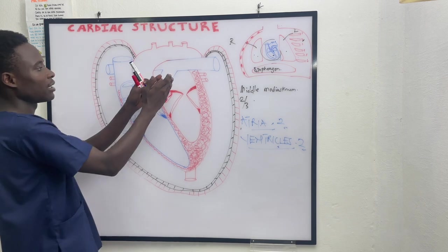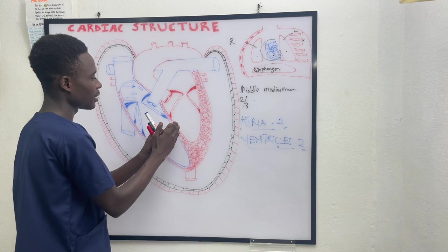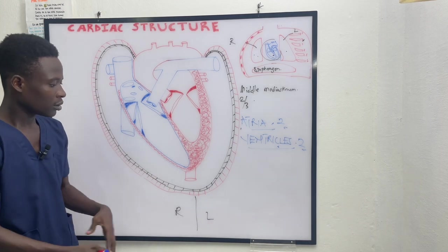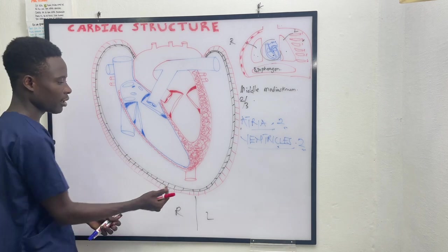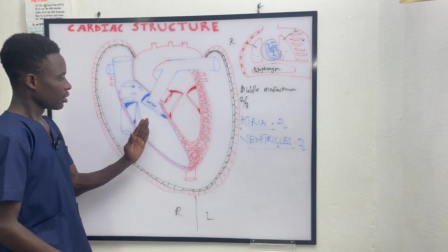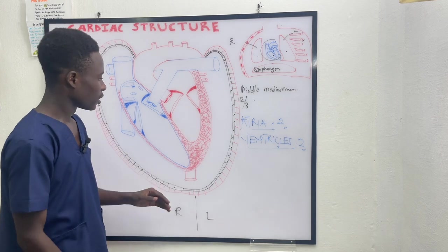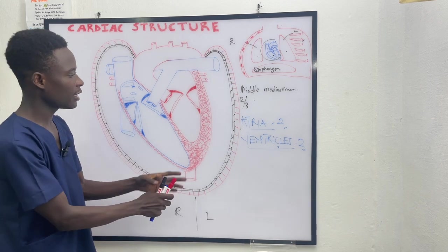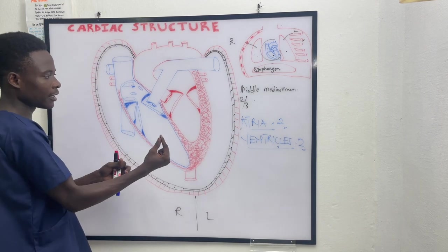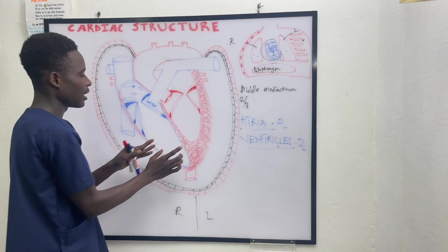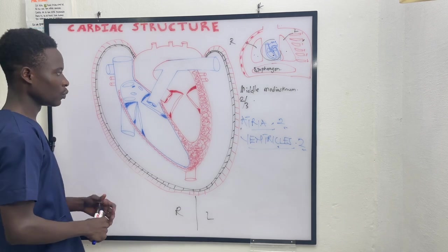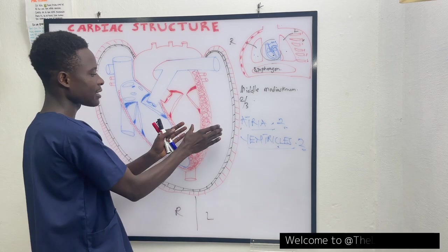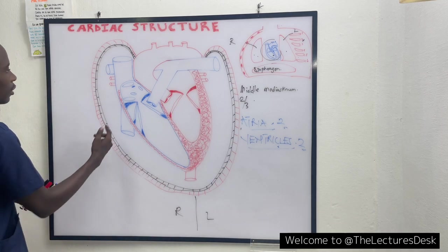We have the right atrium and the left atrium, and similarly the right ventricle and the left ventricle. The heart has two divisions — the left side and the right side. I drew the diagram with two different colors: blue represents the circulation of deoxygenated blood, and red represents the circulation of oxygenated blood. So anything on the blue side is deoxygenated, and on the red side is oxygenated blood circulation.